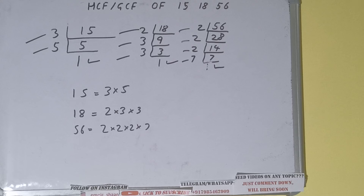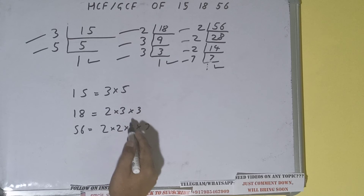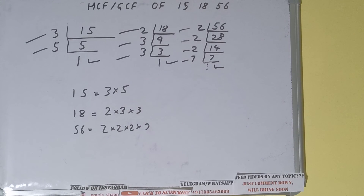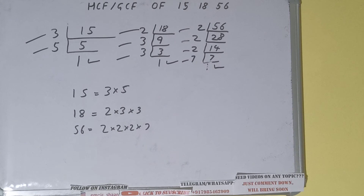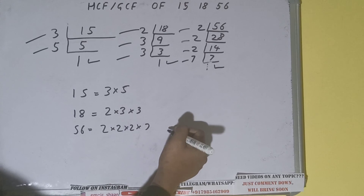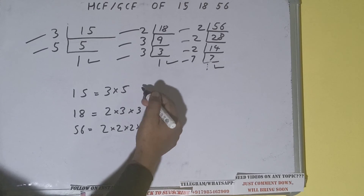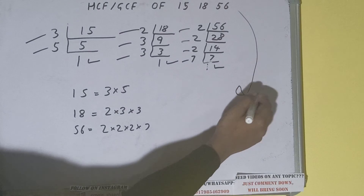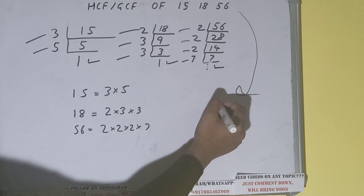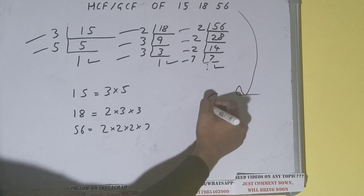The next thing we need to do is find the common prime factors among all three. We have 3 in 15, we have 3 in 18, but we do not have 3 in 56. Checking all other numbers, there is no prime factor that is common across all three numbers.